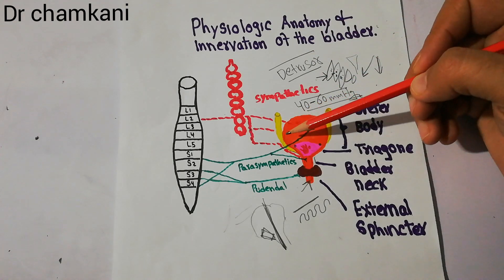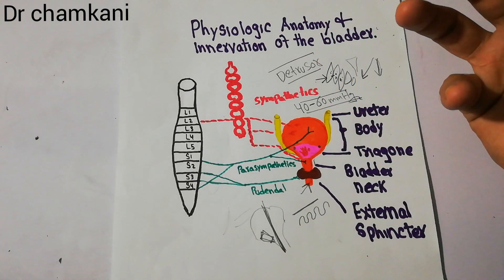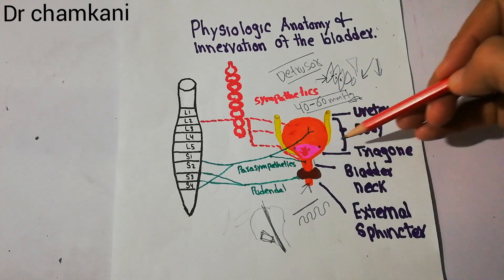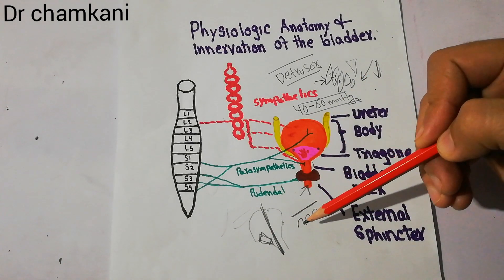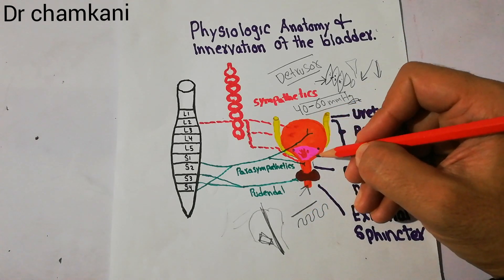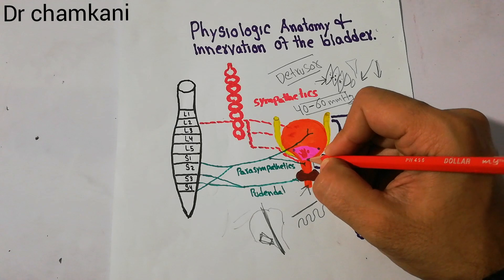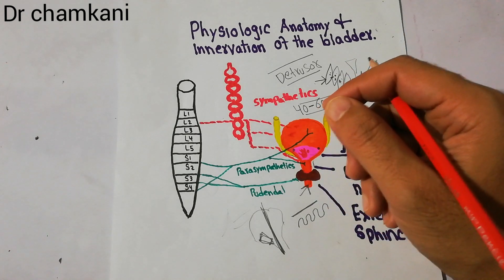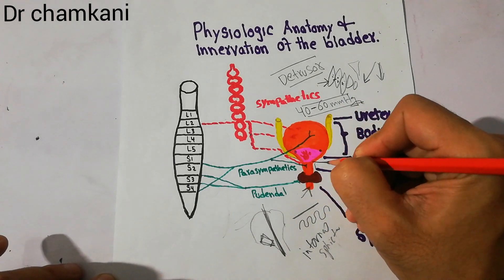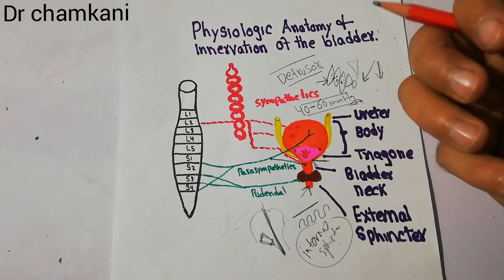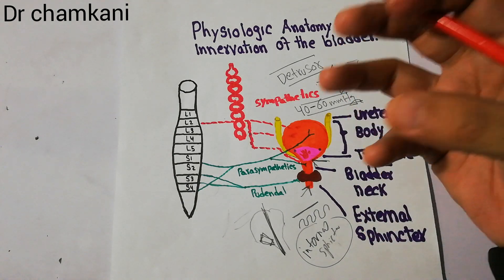Inside the bladder, there are two main parts: the body and the neck. The body is made of detrusor muscles and can contract to generate a lot of pressure. On the posterior side there is a triangular area known as the trigone, which is very sensitive and has smooth mucosa compared to the rugae of the rest of the bladder. At the junction of the trigone and the neck of the bladder, there is the internal sphincter, which keeps the neck of the bladder closed so that no urine can pass into the urethra until sufficient urine has collected.